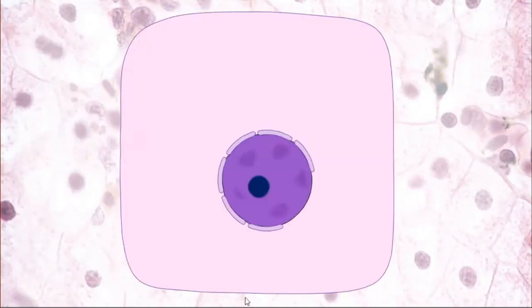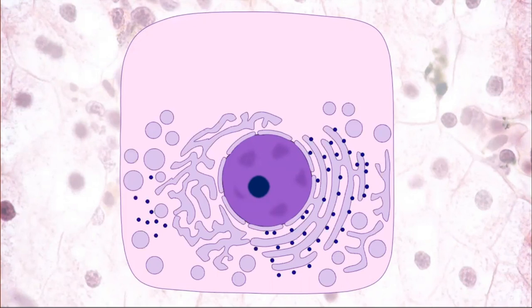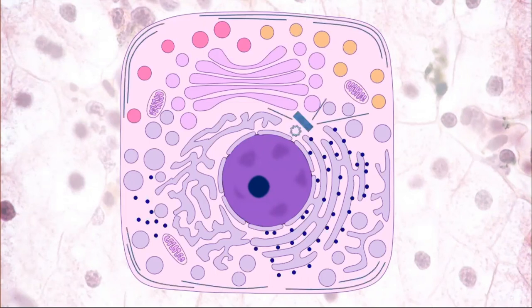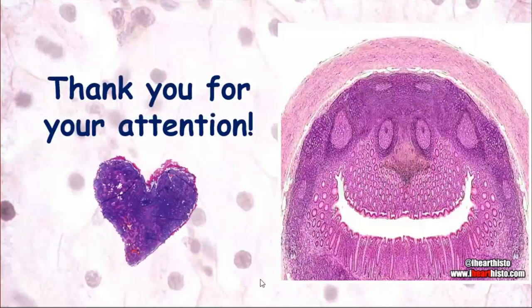In conclusion, we have discussed the principal parts of the cell: cell membrane, nucleus, and organelles including rough and smooth endoplasmic reticulum, transport vesicles, ribosomes, Golgi apparatus, lysosomes and peroxisomes, secretory vesicles, mitochondria, cell center, and cytoskeleton. All these structures are present in all cells. Special features and special organelles of different cell types will be discussed in following topics when we study general and special histology. Thank you for your attention.